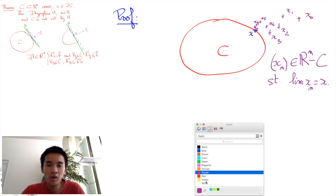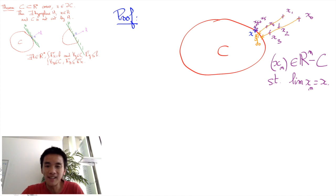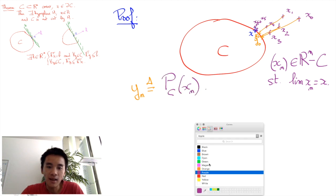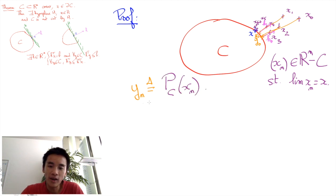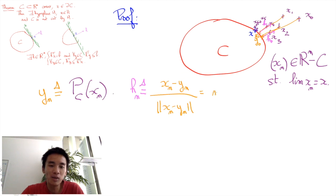For any xn, we call yn the projection of xn to the closure of C. And we define Hn, the unit vector from yn to xn, i.e. Hn is going to be xn minus yn divided by the norm xn minus yn.